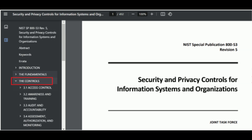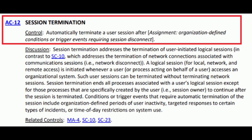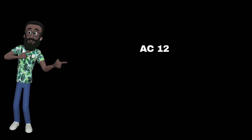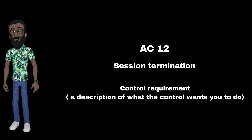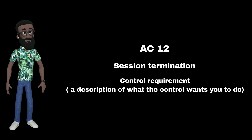Go ahead and drop down on the Access Control menu and select AC-12 Session Termination. Note that each control starts off with the control title, and right below it is the control requirement. In our example, AC-12, the title is 'Session Termination,' and the control requirement is a description of what the control wants you to do.